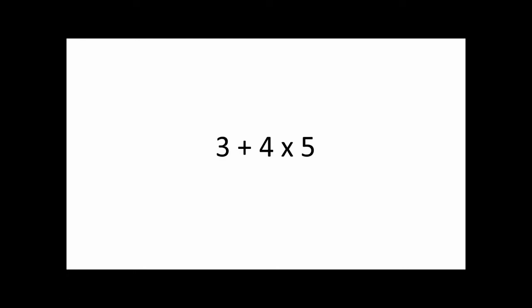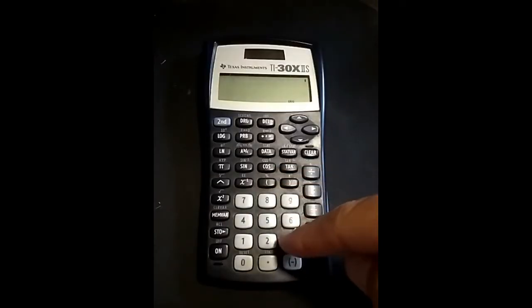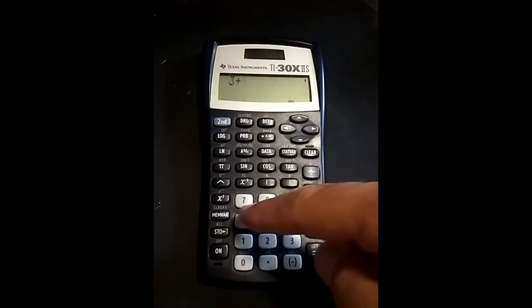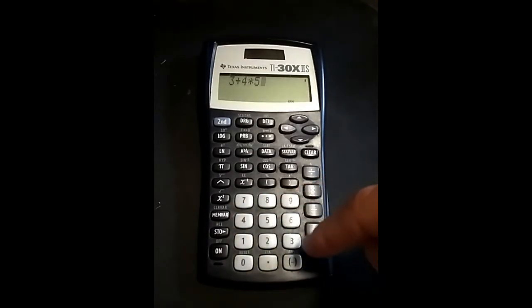So, in this expression, we do the multiplication first, which gets us 20. Then we do the addition, which gets us 23. Your calculator is already programmed to follow the order of operations. Try it. 3 plus 4 times 5 equals 23.